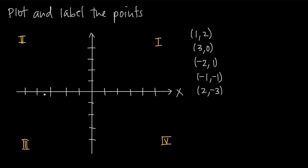Sometimes you'll see both axes with arrows on both ends to indicate that the axes extend in each direction infinitely — so this is infinitely negative here, and infinitely positive here. Sometimes you'll just see arrows on this corner and this corner, because these are the positive directions of the x and y-axis.